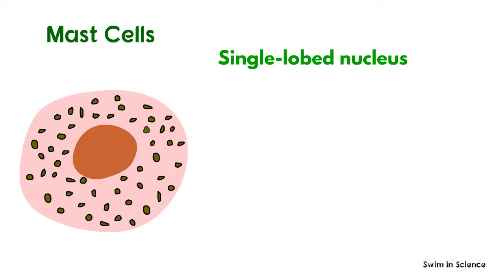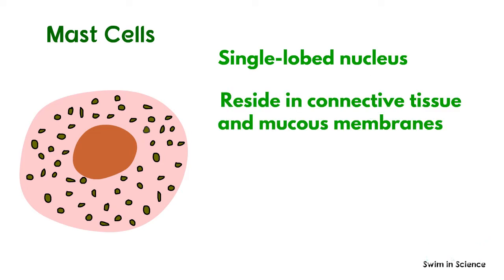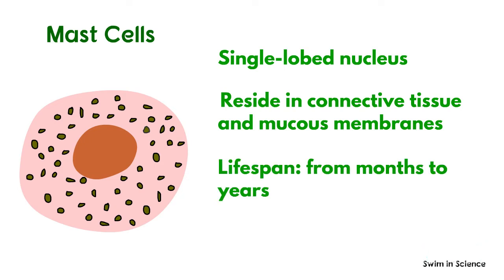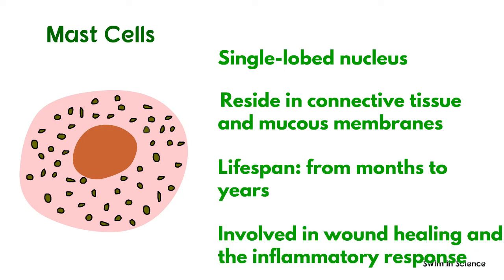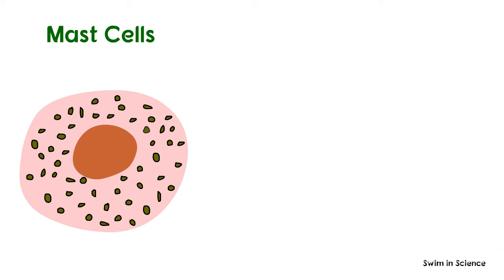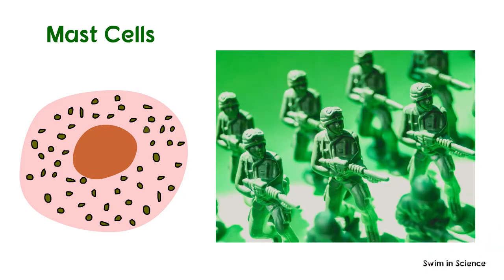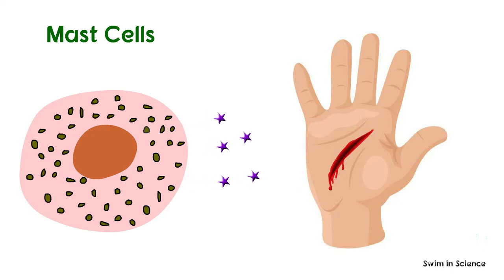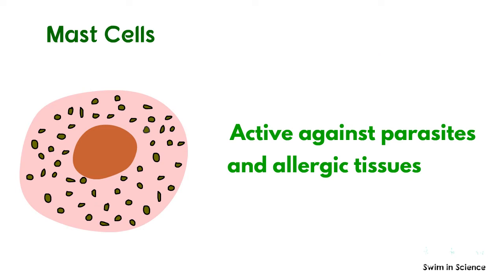Mast cells have a single-lobed nucleus. They reside in the connective tissue around the blood vessels and mucous membranes. Their lifespan varies from months to years. They are typically involved in wound healing and the inflammatory response by releasing chemical mediators such as histamine and cytokines. Mast cells also have important functions as soldiers of the immune system and are early producers of cytokines in response to infection or injury. They are active against many parasites and various allergic tissues.